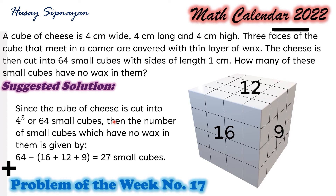Since the cube of cheese is cut into 64 small cubes, the number of small cubes which have no wax is given by: 64 minus the cubes on the 3 faces of the big cube, that is 16 plus 12 plus 9, which equals 37. So 64 minus 37 equals 27. 27 small cubes have no wax in them.